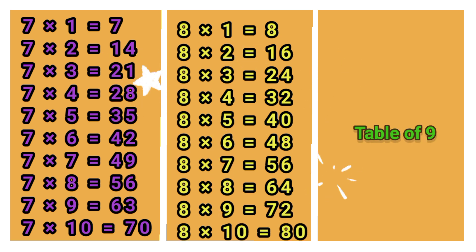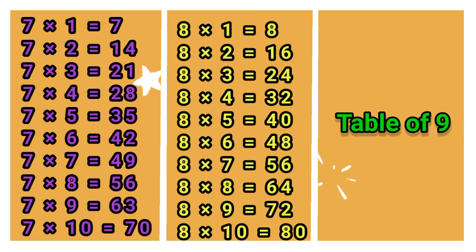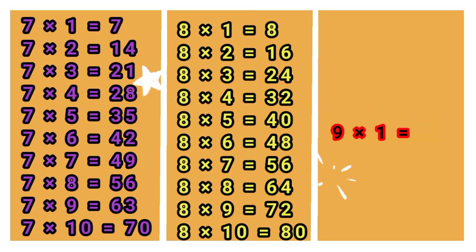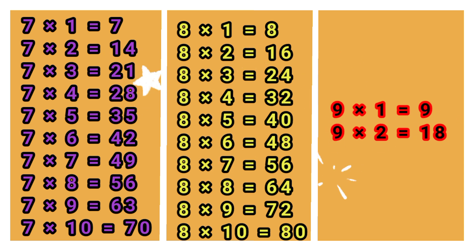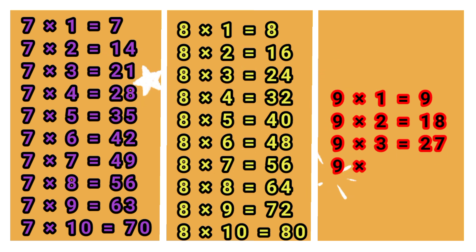Multiplication Table of 9. 9 times 1 jah 9. 9 times 2 jah 18. 9 times 3 jah 27. 9 times 4 jah 36.